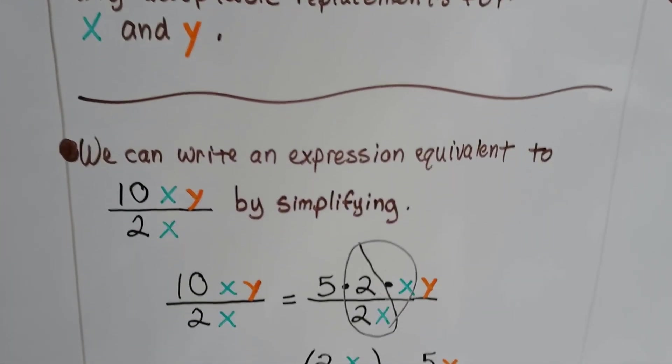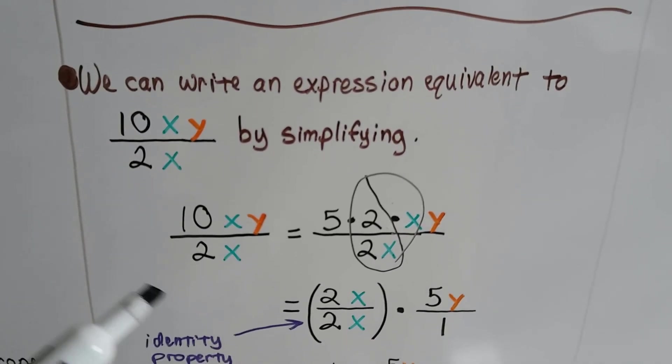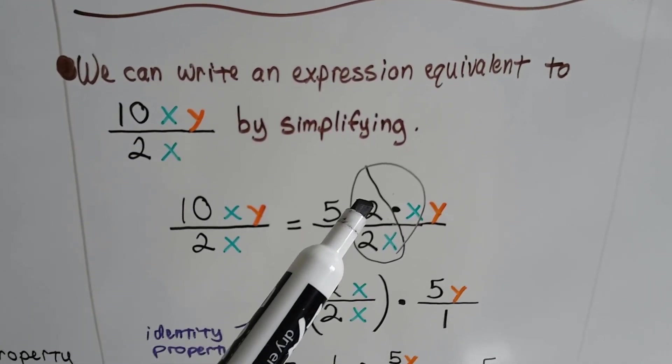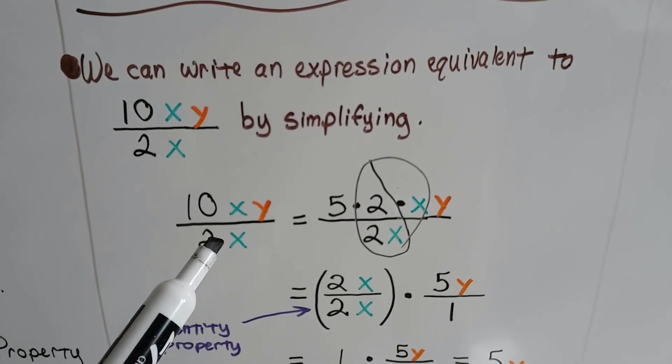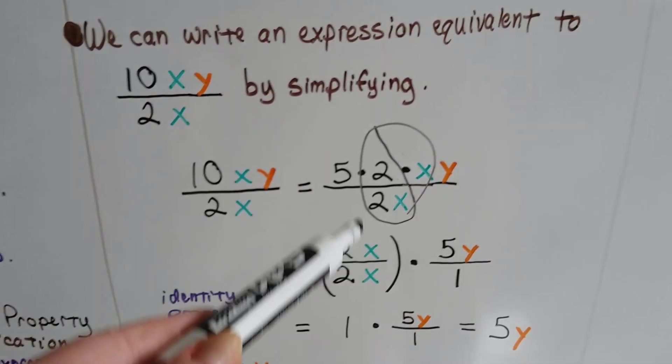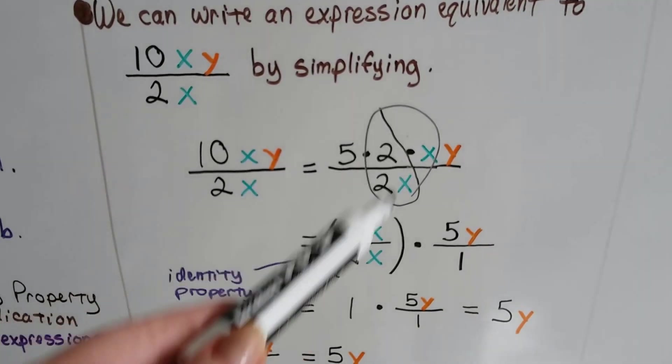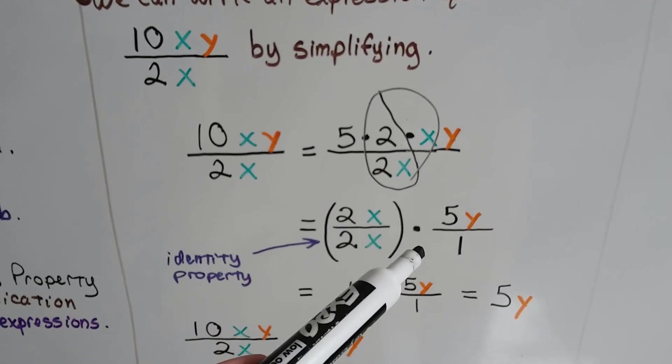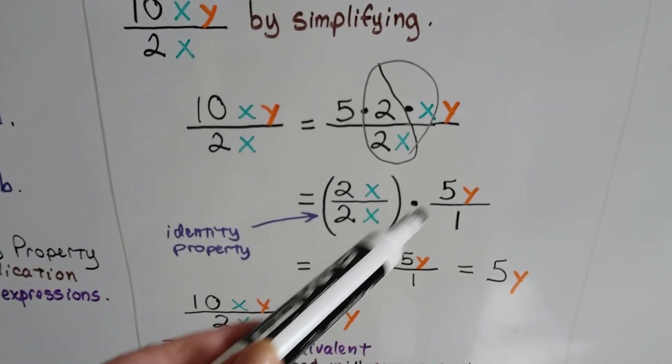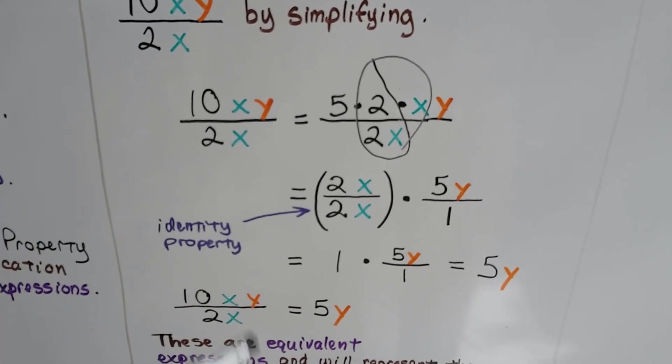We can write an expression equivalent to 10xy divided by 2x by simplifying. 10xy is the same thing as 5 times 2 times xy, and it's over 2x. You can see the 2x over 2x cancels out as 1. That's the identity property. We're left with 5y. This 1 times the 5y is just going to be 5y. That's what it simplifies to.